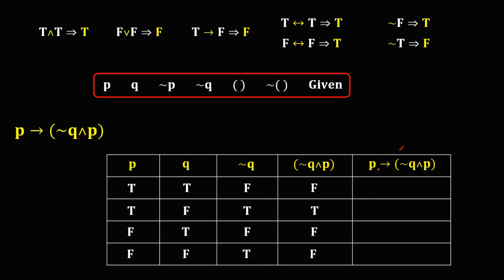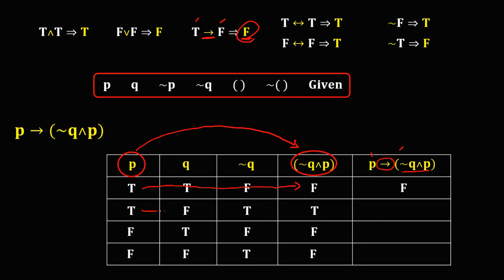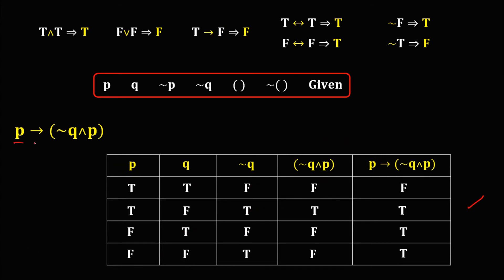For the last column — the given — the connector is arrow or implication. For implication, only true implies false gives a false truth value. From P and the conjunction column: true implies false is false; true implies true is true; false implies false is true; and false implies false is true. Only TF is false. This is now the truth table for this equation.